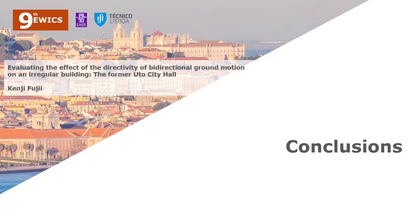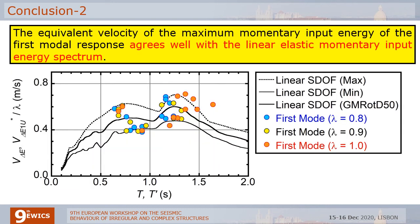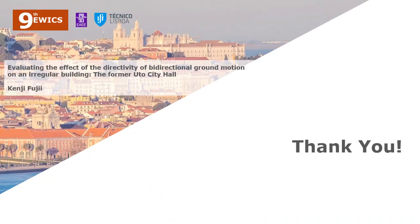I would like to finalize my presentation. The first conclusion is: the angle of incidence where the peak drift at the flexible side column is the largest is close to that where the peak equivalent displacement of the first mode is the largest. The second conclusion is: the equivalent velocity of the maximum momentary input energy of the first mode response agrees well with the linear elastic momentary input energy spectrum. This is the end of my presentation. Thank you very much.